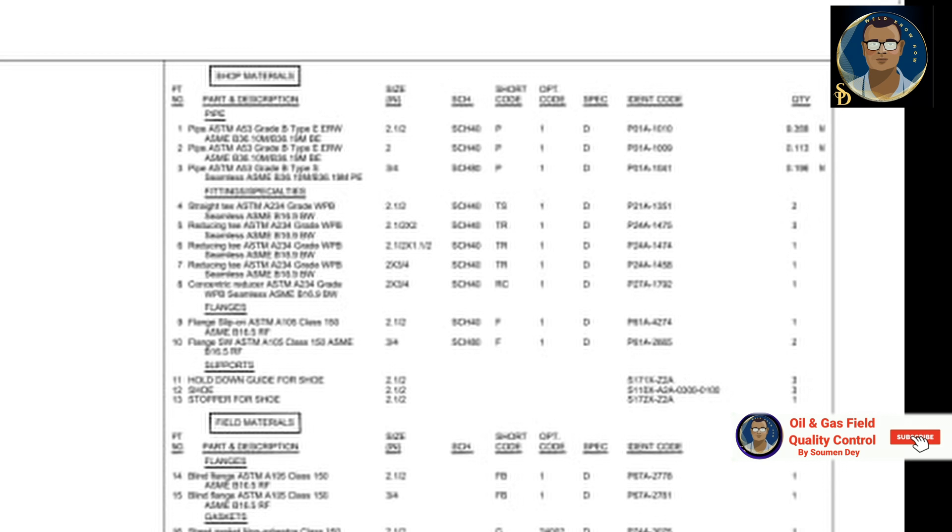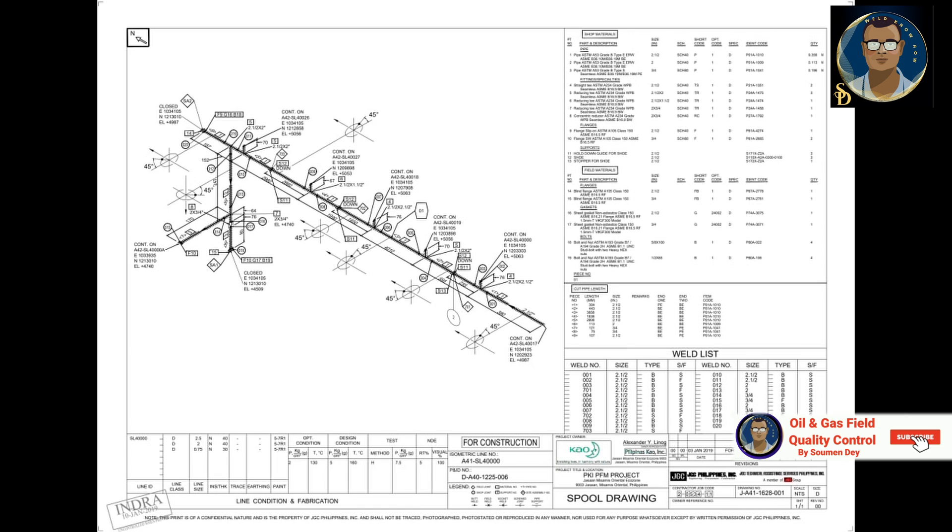A piping isometric drawing provides all the required information like pipeline number, continuation isometric number, flow direction, piping dimensions, piping joint types, soil types, flange and valve types, equipment connection details, piping components descriptions with size, quantity, and material codes.